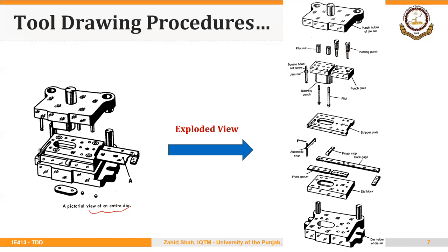The exploded view shown on the right side corresponds to the die set shown on the left. We can see clearly that at the top will be the punch holder, then there will be a piercing punch attaching to it, then a punch plate through which the piercing punch attaches to the punch holder, and then a pilot, a blanking punch, and so on. The entire assembly fits to the punch holder.